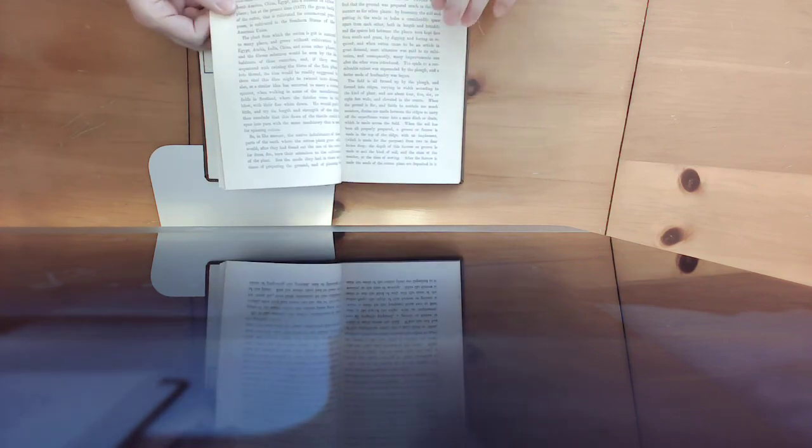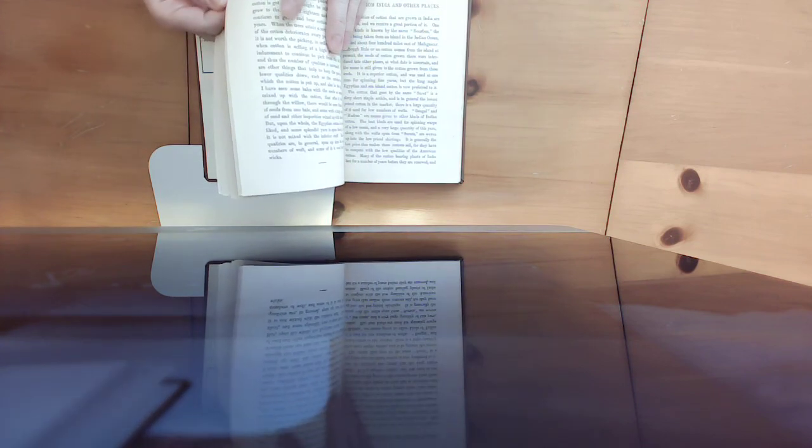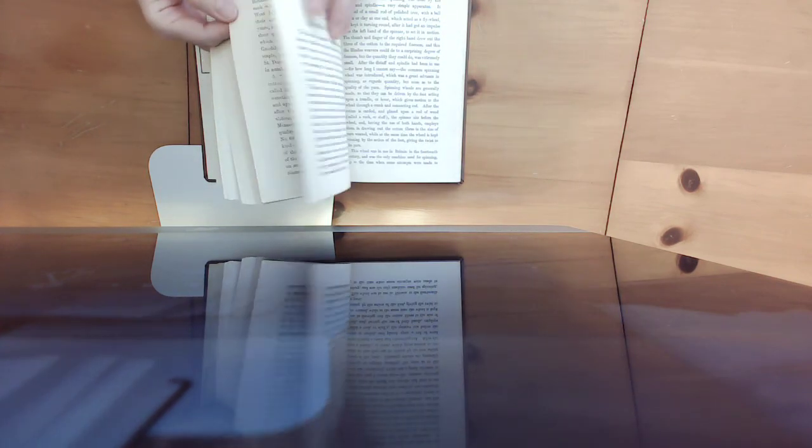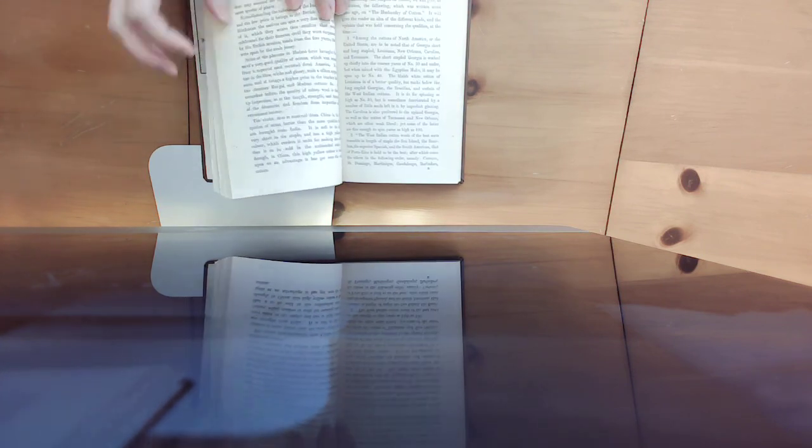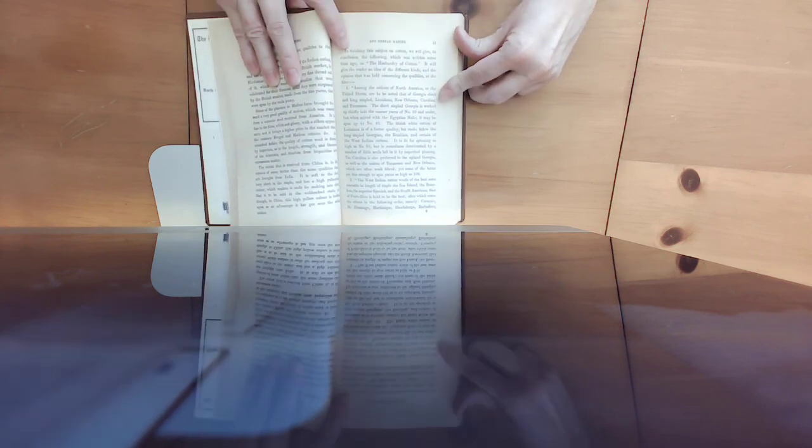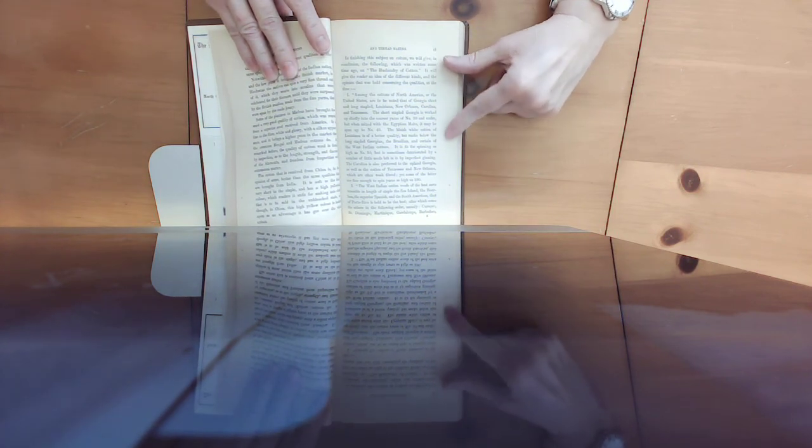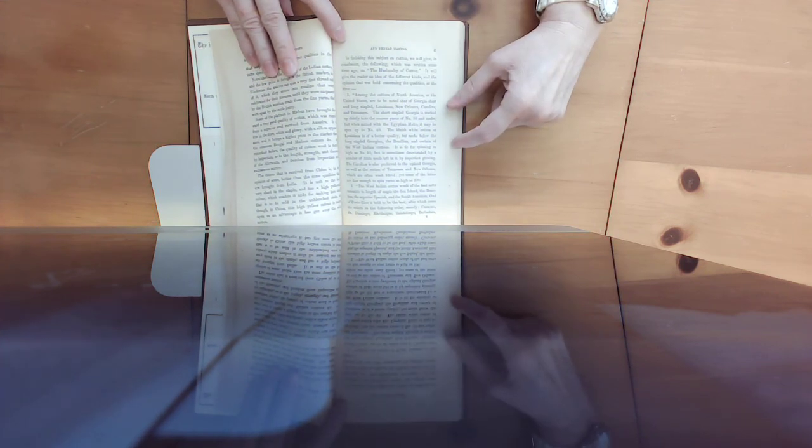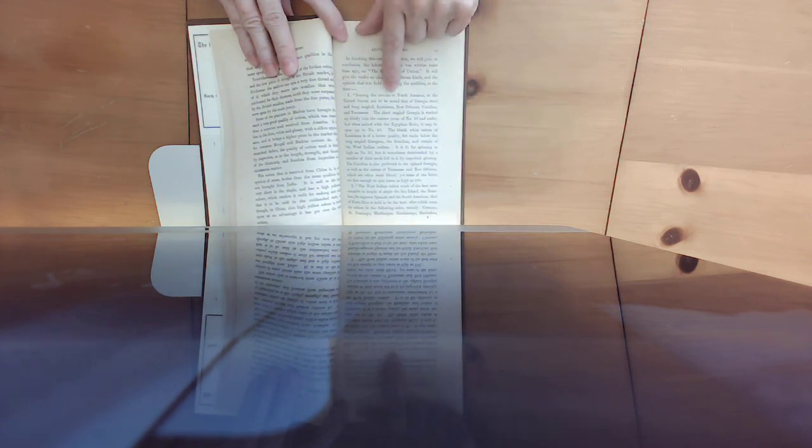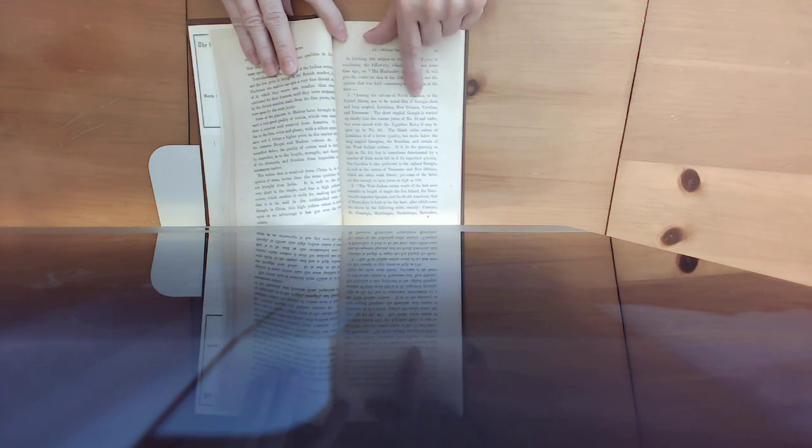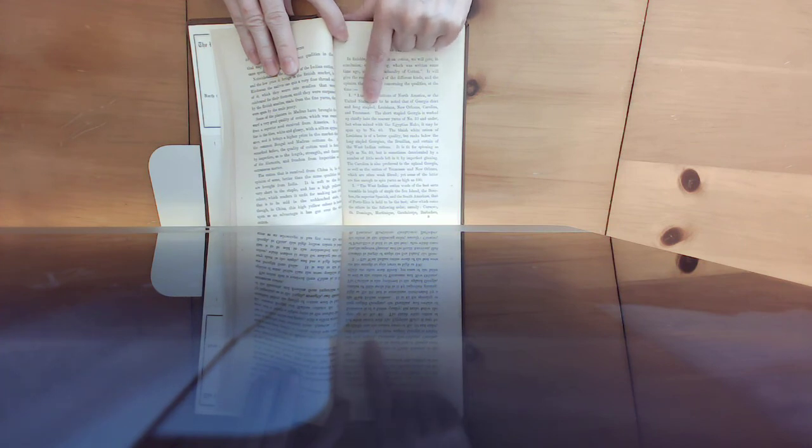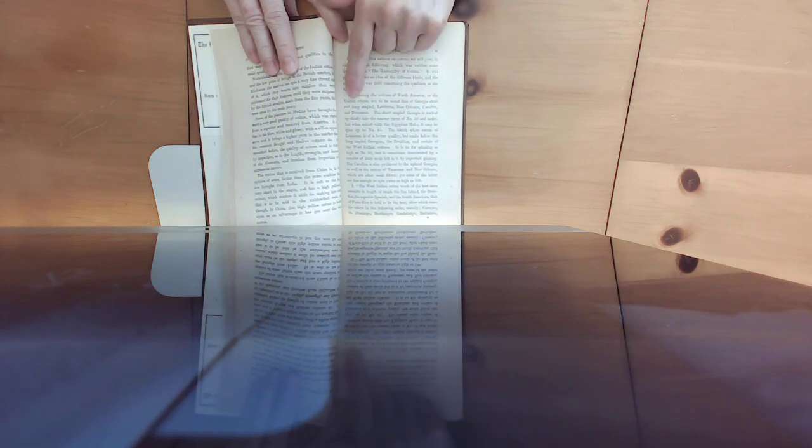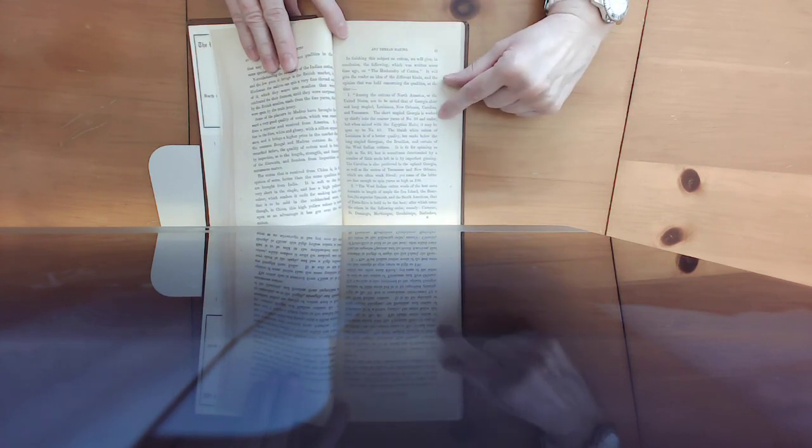He goes on about the history of cotton. Some places are called differently than they are now. On page 41 he talks about North American cottons. What I found interesting is the variety of cottons that were in the United States. Among the cotton of North America, there was Georgian short and long stapled, Louisiana, New Orleans, Carolina, and Tennessee even grew cotton.